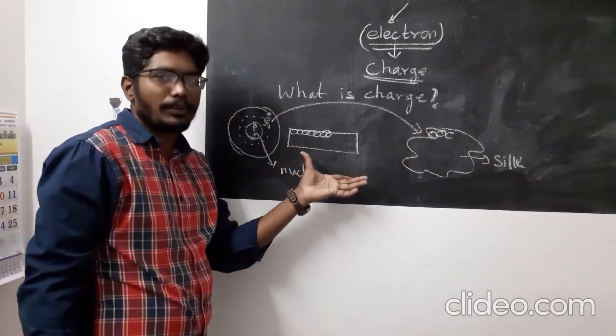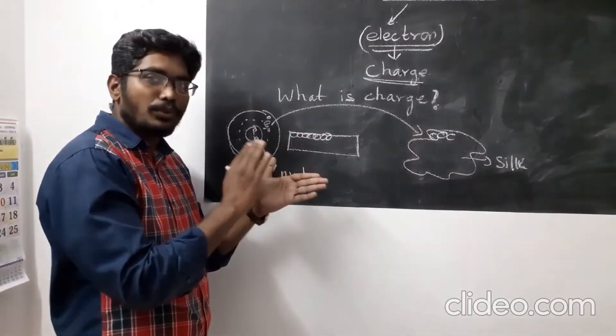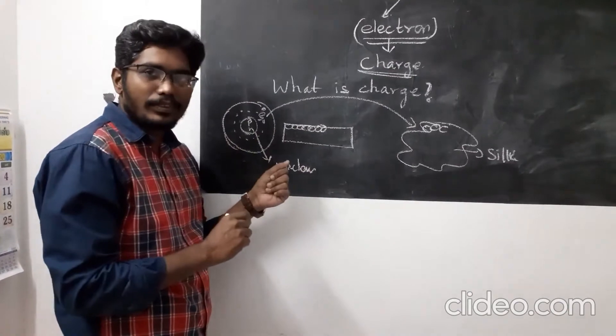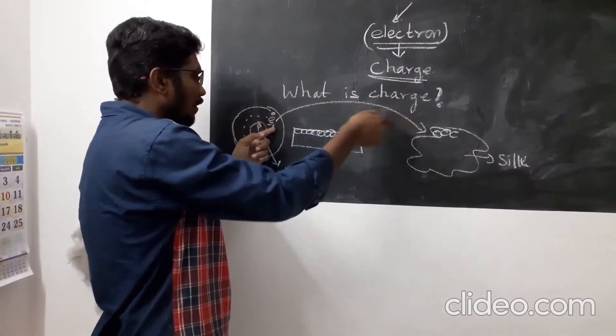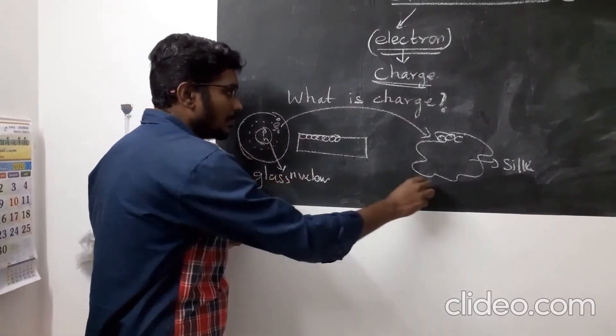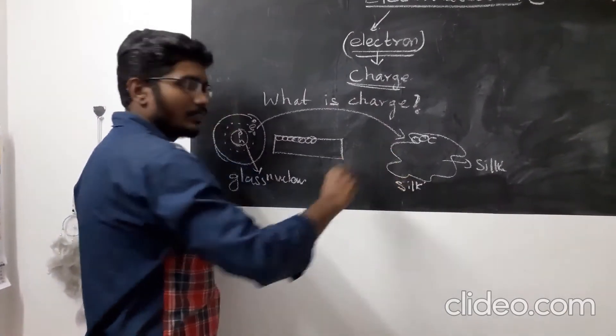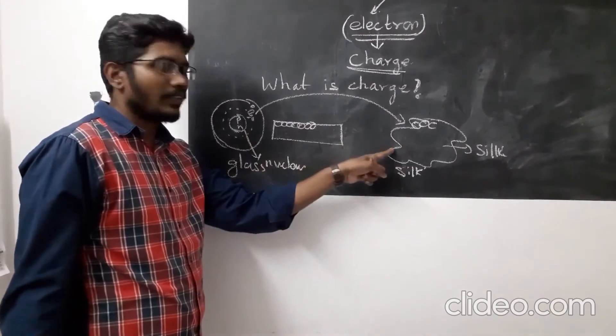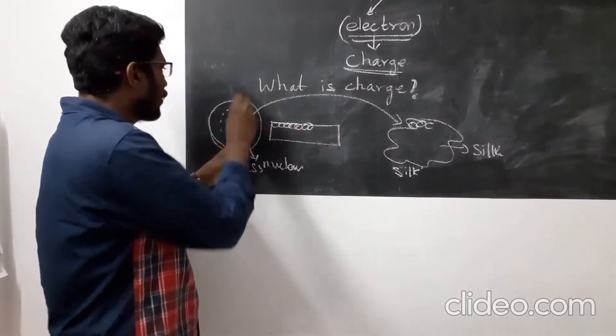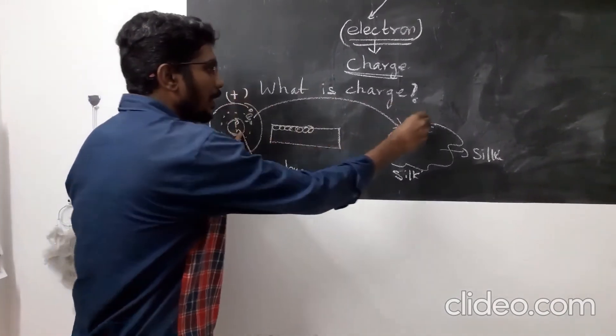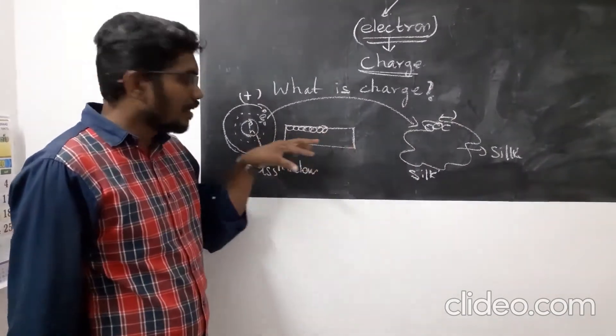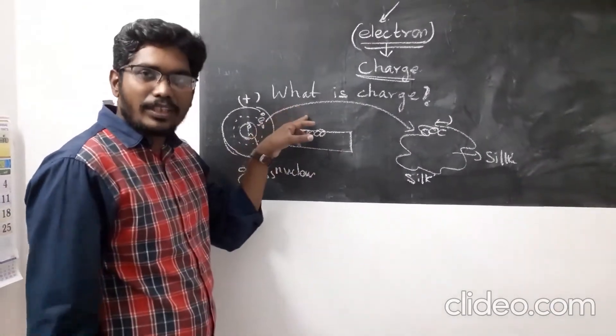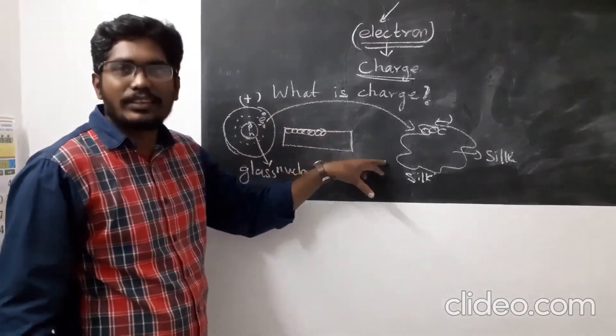This is what actually happens when two suitable materials are rubbed together. The electron is transferred from glass to silk. When they get transferred, one becomes positive and the other becomes negative. This character, which is built into the body when it gets rubbed due to the transfer of electrons, is known as charge.